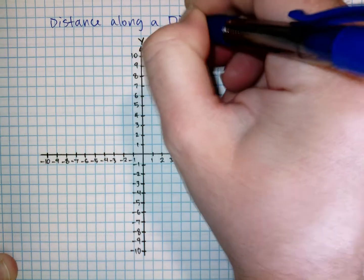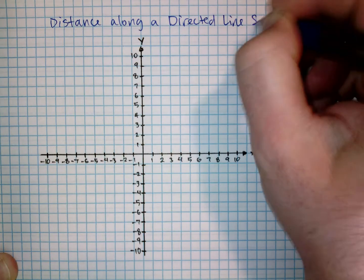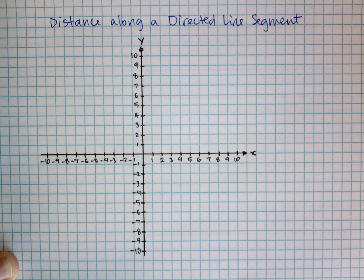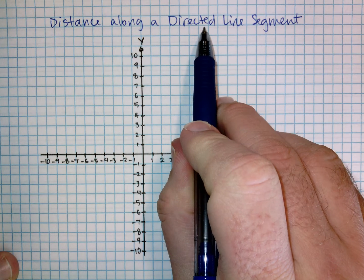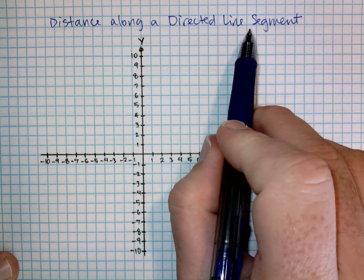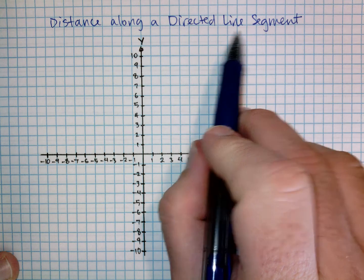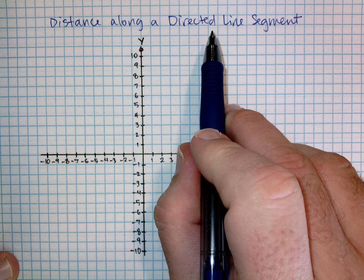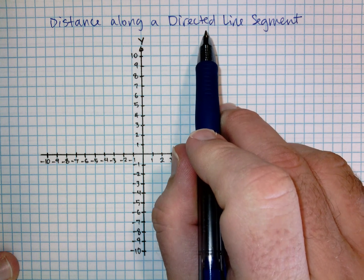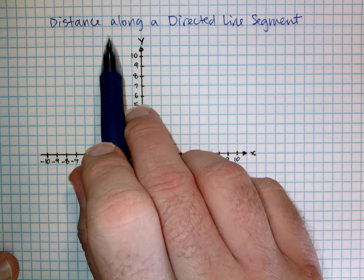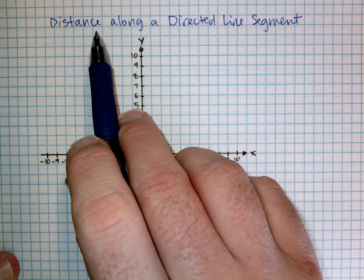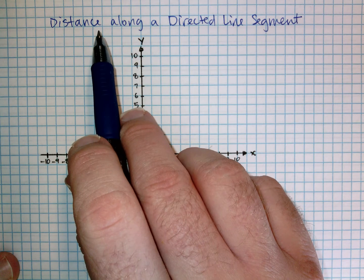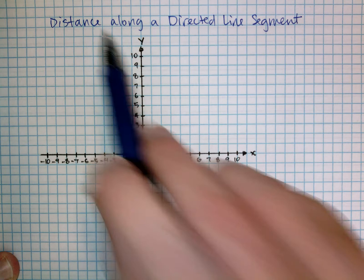A line segment is part of a line that has a beginning and an end. A directed line segment says that it has to go in a certain direction. Normally, a line segment's direction doesn't matter, but a directed line segment has a beginning and an end — a 'from' and a 'to' — and then we can find the distance. What's difficult is partitioning and finding a fraction of that distance along the line.